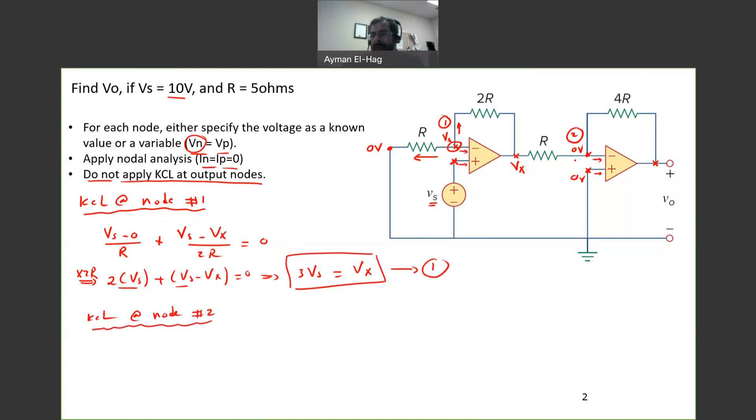Then we'll apply KCL at node number two. So again, we'll have this branch, current is leaving, and this current is leaving also. And the third branch, the current is equal to zero. So we will have here, the voltage here is what? Is zero, as we discussed before. So we have zero minus Vx divided by R.